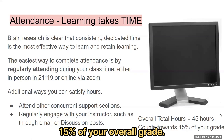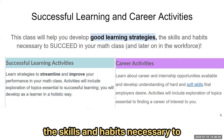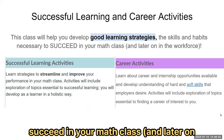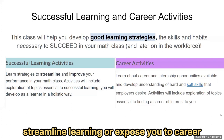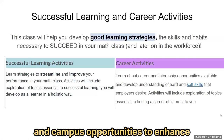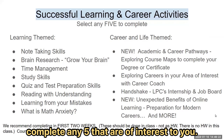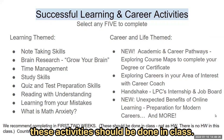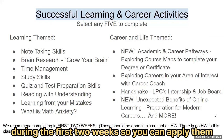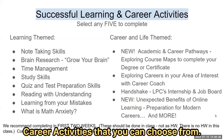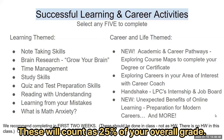Attendance counts towards 15% of your overall grade. During class time, you will have the opportunity to develop good learning strategies — the skills and habits necessary to succeed in your math class and later in the workforce. We have developed activities around things supported by brain research to improve and streamline learning, or to expose you to career and campus opportunities to enhance your college experience. As part of your overall grade, we want you to complete any five that interest you. There is no homework in concurrent support; these activities should be done in class. We recommend completing them during the first two weeks so you can apply them for the rest of the semester. These will count as 25% of your overall grade.